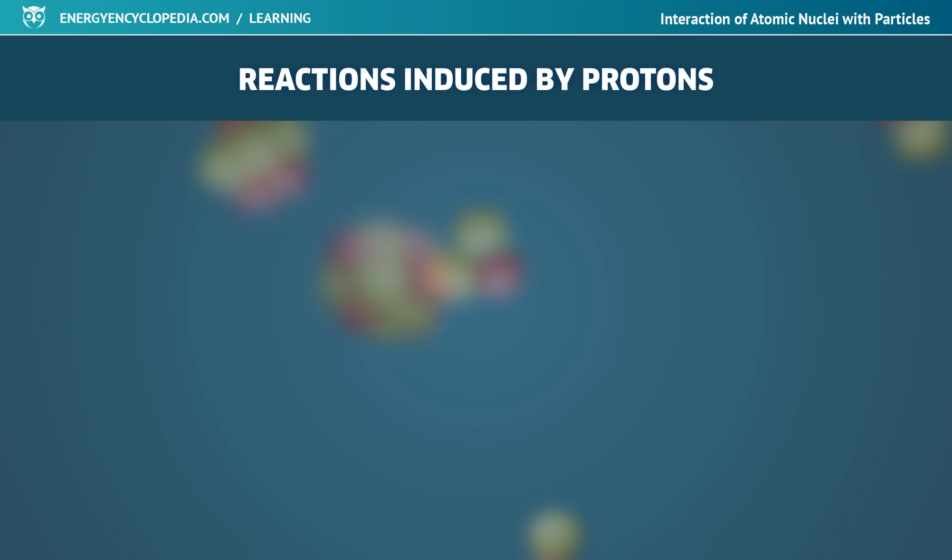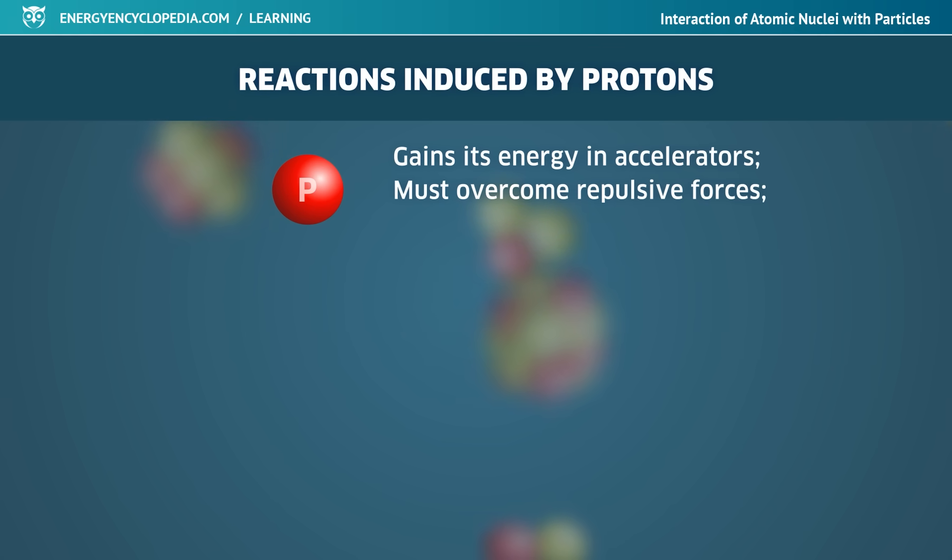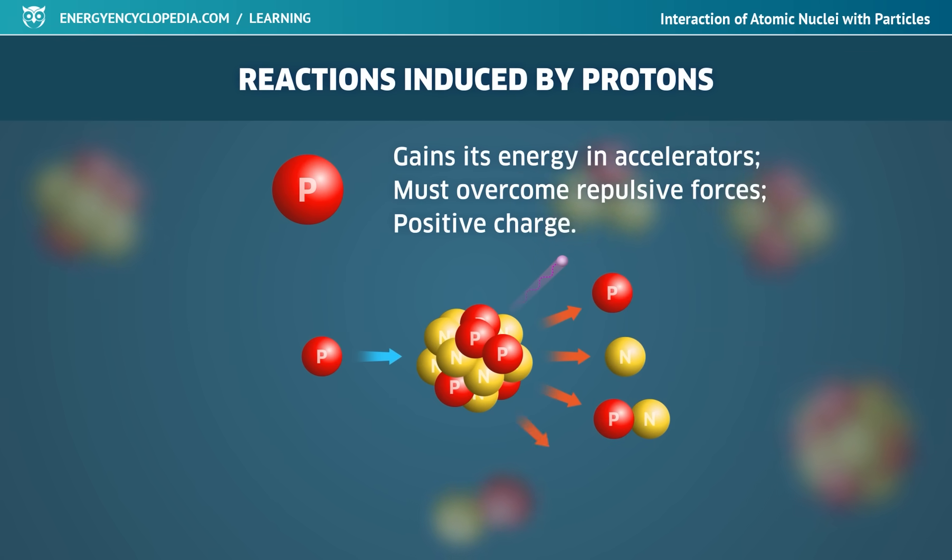Proton-induced nuclear reactions are possible only when the protons are accelerated sufficiently in cyclotrons or linear accelerators, so that the flying proton overcomes the repulsive electric forces of the positively charged nucleus and enters it. Depending on the energy of the accelerated proton, a number of nuclear reactions can take place, from simple radiation capture to the emission of a proton, neutron, deuteron or alpha particle.